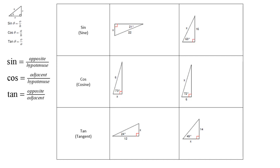Sine is opposite over hypotenuse. Cosine is adjacent over hypotenuse. And tangent is opposite over adjacent.